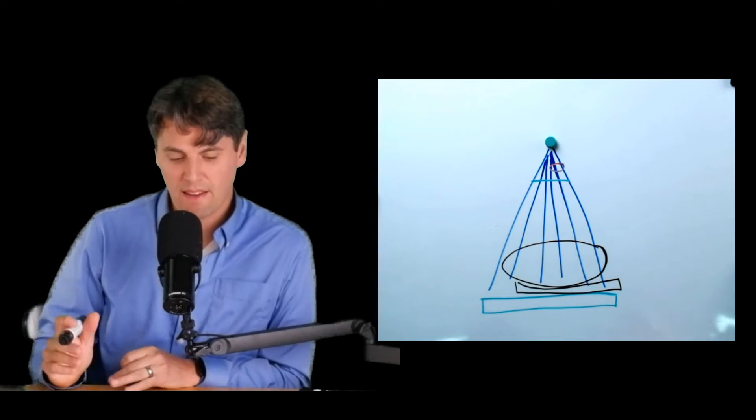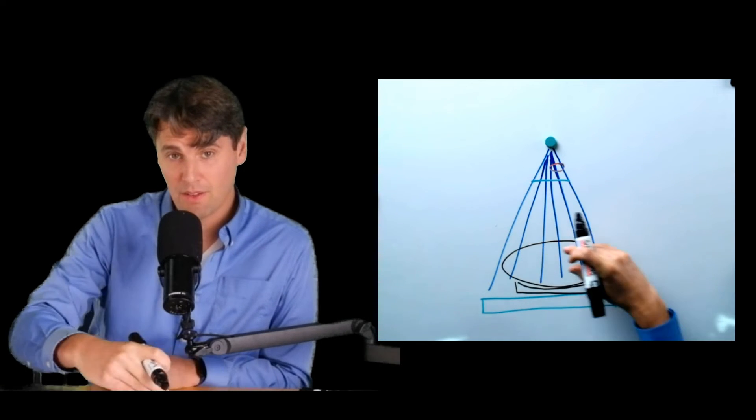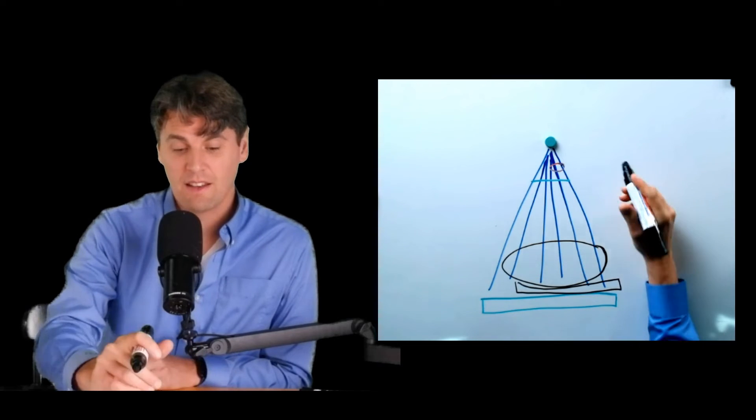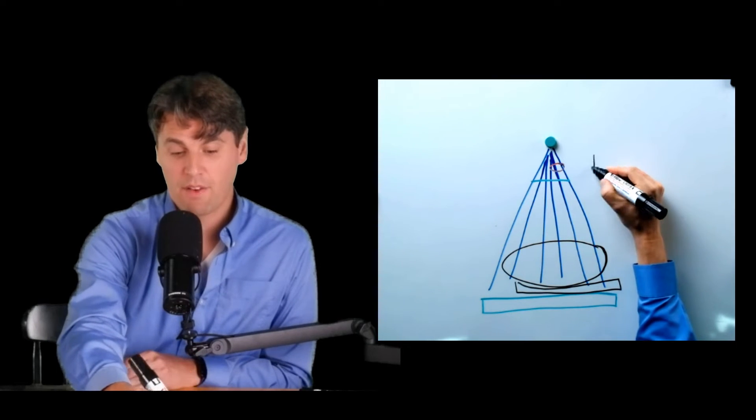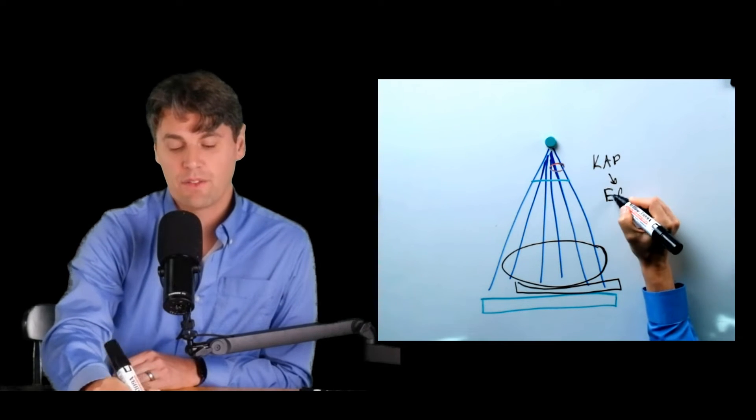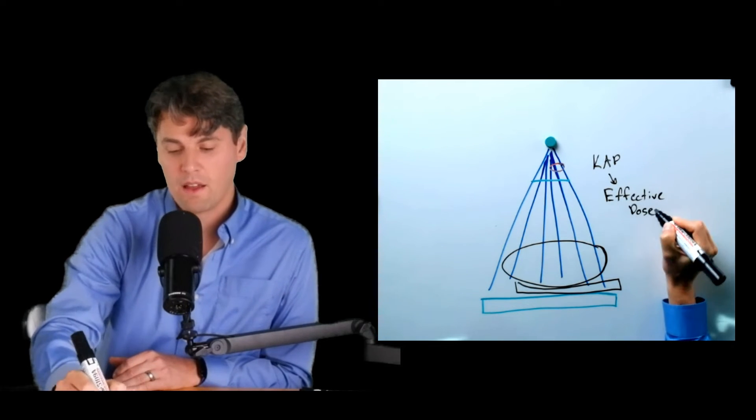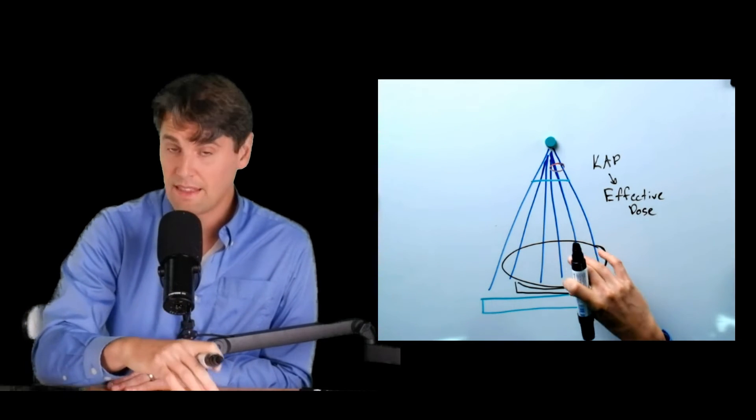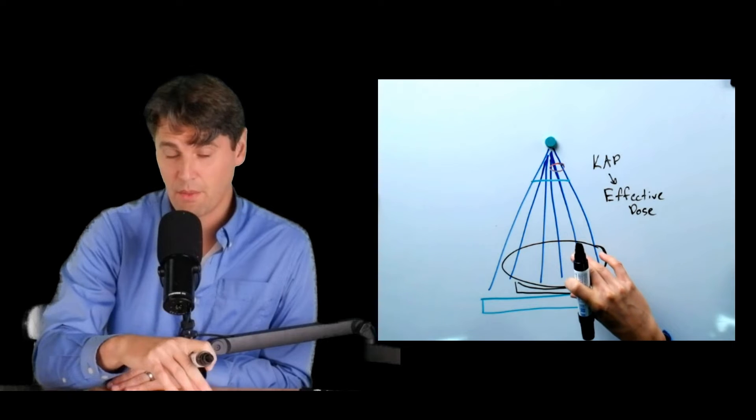There's more sophisticated ways now where we can actually model the inside of the human body and try and actually take our number that we have, our Kerma area product, and we can try and convert that to an effective dose. So to do that, we need to make some assumptions about the way that the organs are positioned within the body.